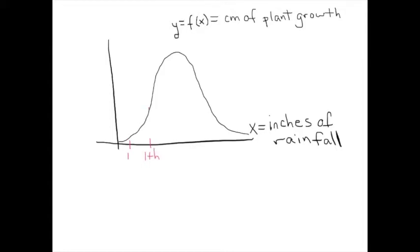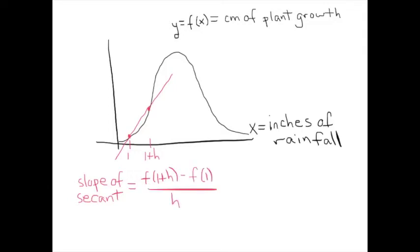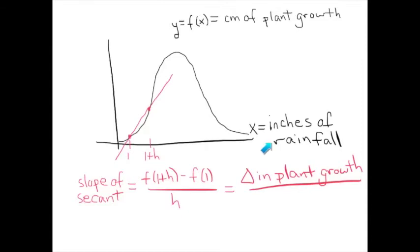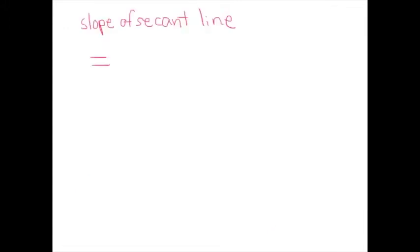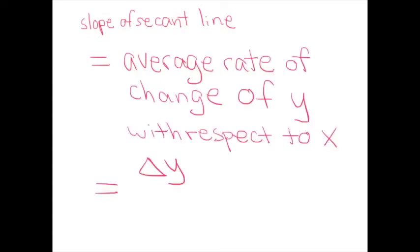Let's pick two points on the x-axis. Each of these has a point on the graph, and we can draw the secant line between them. The slope of this secant line would be f(1+h) minus f(1) over h. What does it mean? The numerator is the change in plant growth, measured in centimeters. The denominator is the change in rainfall, measured in inches. So overall, this quantity tells us: for every inch of rainfall, how much does plant growth change in centimeters? Change in centimeters per inch of rainfall — the slope of the secant line represents an average rate of change of y with respect to x.